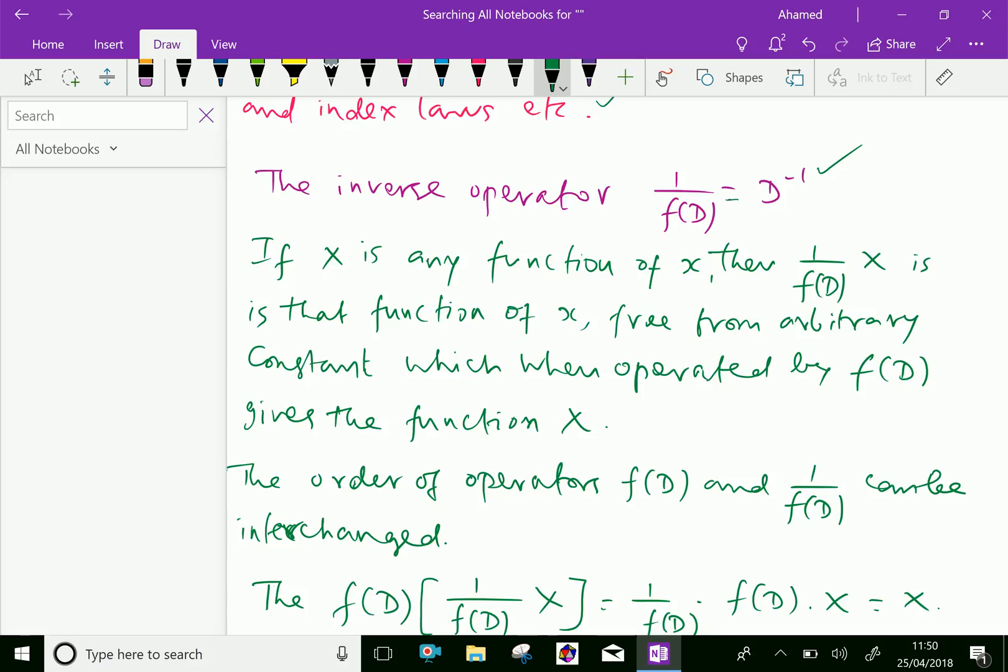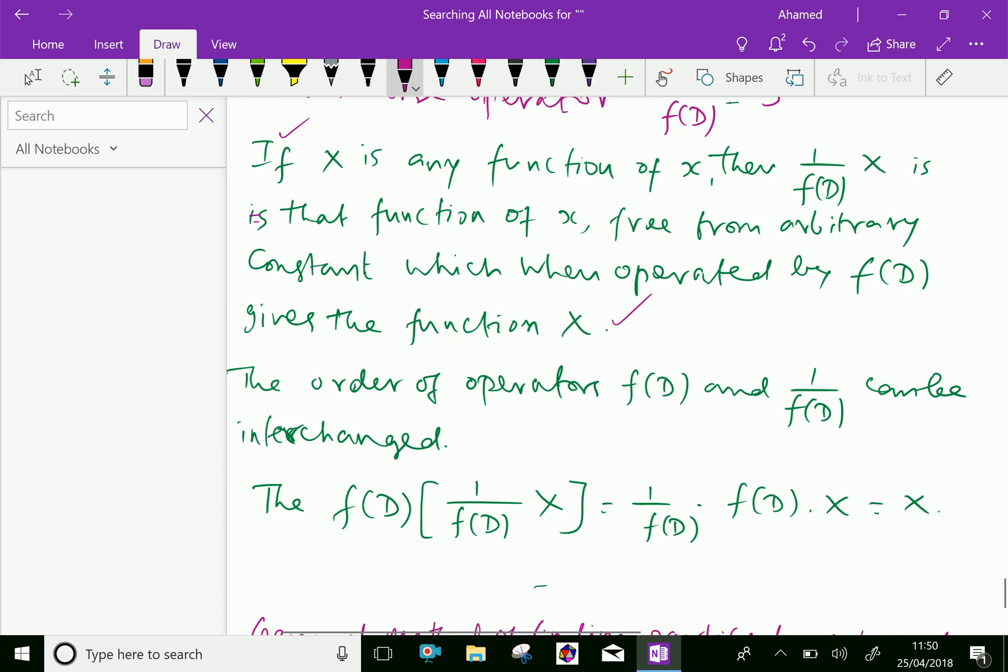If x is any function of x, then 1 over f of D times x is that function of x free from arbitrary constants, which when operated by f of D gives the function x.